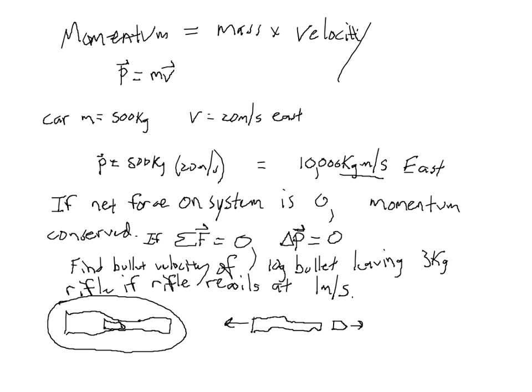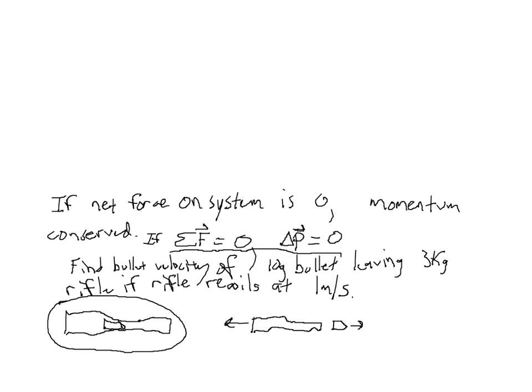There are no other net forces on this system. There might be a person holding it up, but gravity is pulling it down and those two forces cancel each other out. So there's no net force on the bullet-rifle system. And if there's no net force, then momentum must be conserved, so we can use conservation of momentum to figure out the bullet velocity.